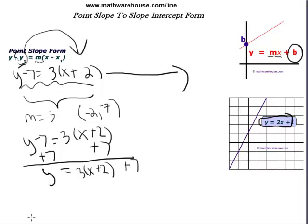And then we still have 3 times x plus 2 plus our 7 now. So step one is add y1 to both sides, add the opposite of y1 to both sides, and step two is to distribute the slope, or m, to x minus x1.